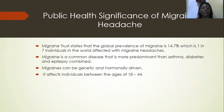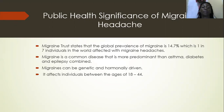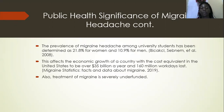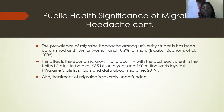Public health significance: the Migraine Trust states that the global prevalence of migraine is 14.7 percent, meaning one in seven individuals is affected. It affects those between ages 18 and 44 and can be hormonally or genetically driven. Migraine is more predominant than asthma, diabetes, and epilepsy combined. The prevalence among university students is 21.8 percent for women and 10.9 percent for men. This affects economic growth, with costs equivalent to over $35 billion a year in the United States and $160 million in worldwide losses.